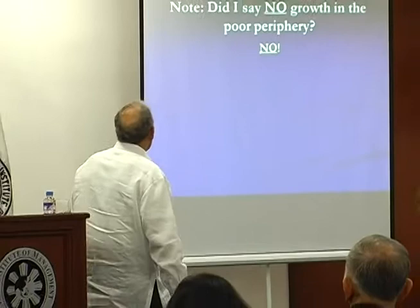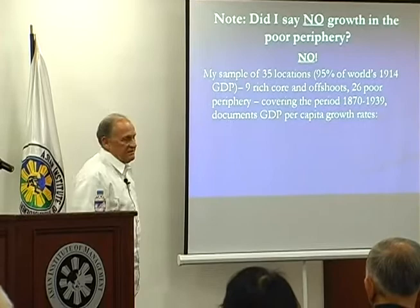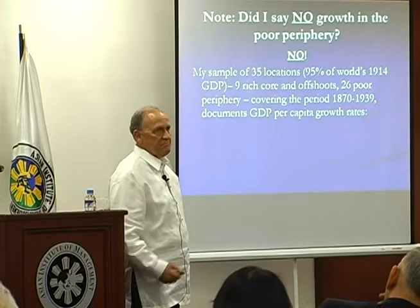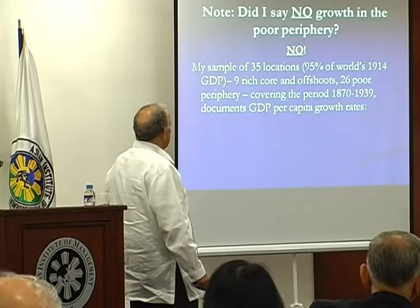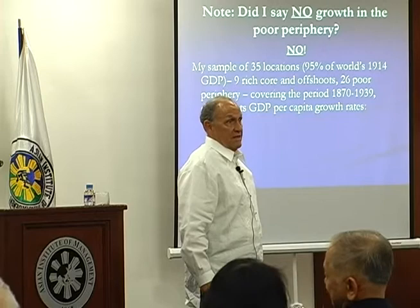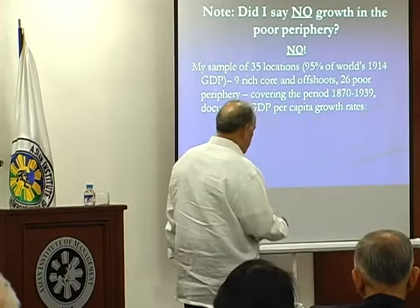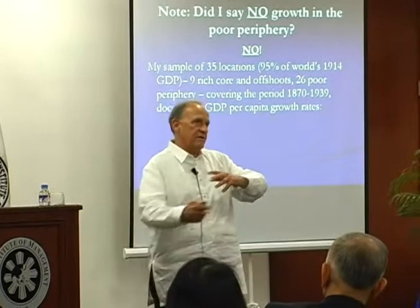I want to be sure that you understand that I haven't said there was no growth in the poor periphery — there was. The sample of countries for which I've got evidence, there are 35 of them, and they cover 95% of the 1914 GDP of the world, so I'm missing 5%, but we got most of them. Of the poor countries, I got 26, and it includes the Philippines. For the period 1870 to just prior to World War II, we have pretty good evidence documenting the performance of these economies in many dimensions — HDI as well as more conventional GDP per capita and industrialization evidence.